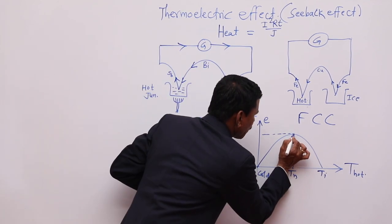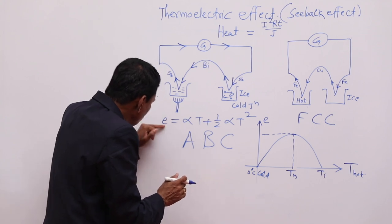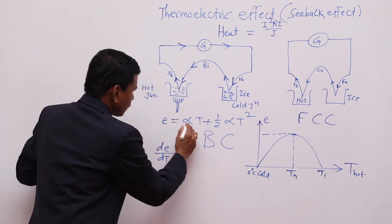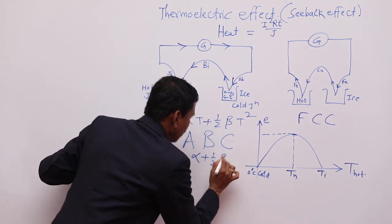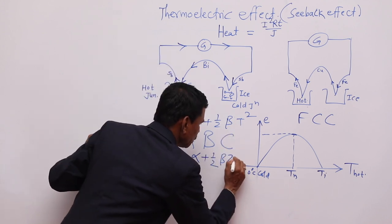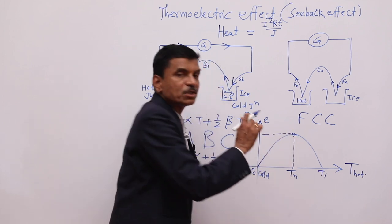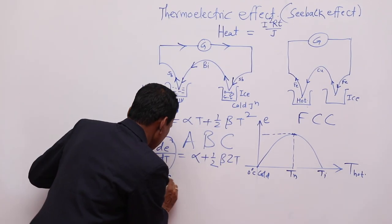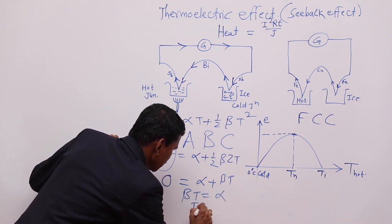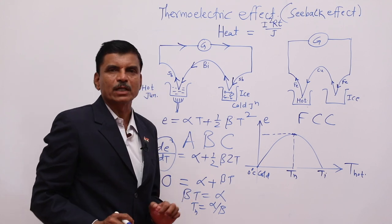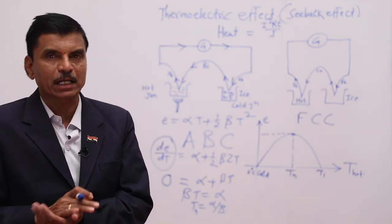Using the equation E = αT + ½βT², at the neutral temperature EMF is maximum and there is no change. Taking the derivative dE/dT = α + βT and setting it equal to zero (since EMF is at maximum), we get α + βT = 0, so βT = α, giving T = α/β. This temperature T = α/β is called the neutral temperature, at which the thermocouple produces the maximum thermoelectric EMF.